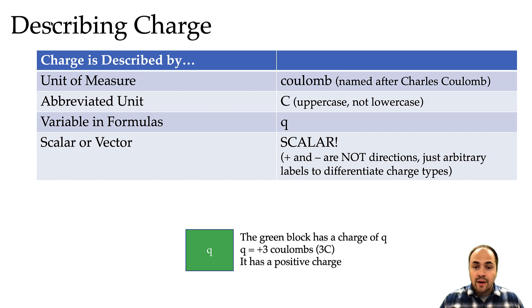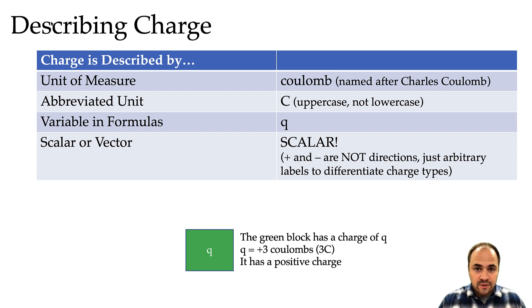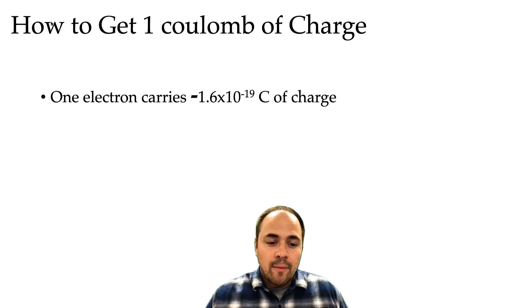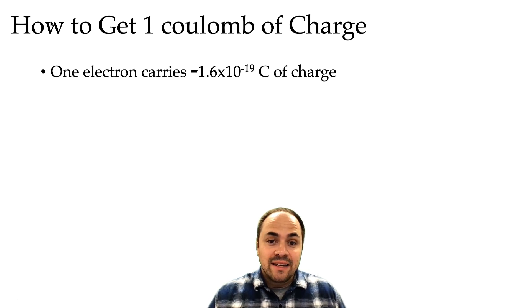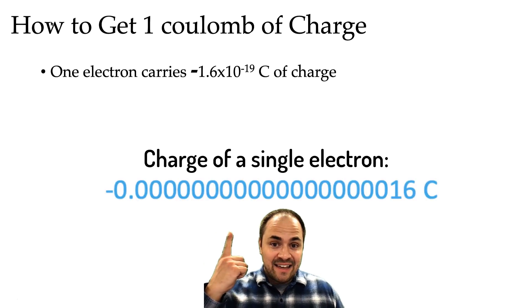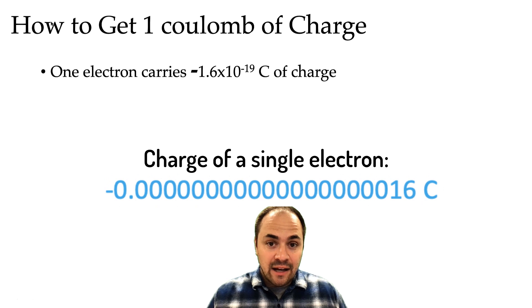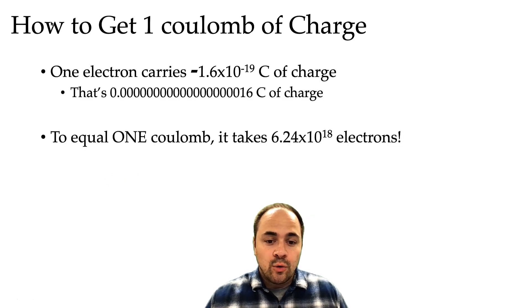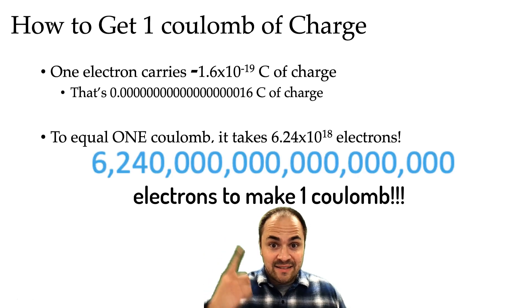For example, in this green box I have labeled Q — remember Q is our variable for charge. Q equals positive three coulombs, or positive 3 C if we abbreviate. That means it has a positive charge and the amount of charge is three coulombs. Now, one electron carries negative 1.6 × 10⁻¹⁹ coulombs of charge — a very tiny number. To equal one coulomb it would take 6.24 × 10¹⁸ electrons — that is a huge number of electrons to get one coulomb of charge.